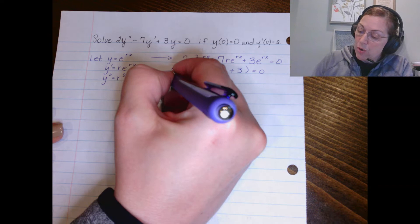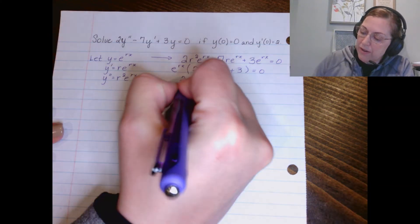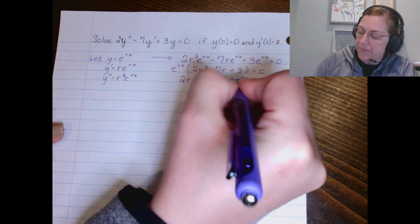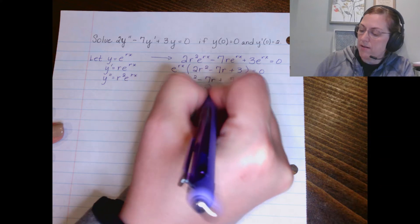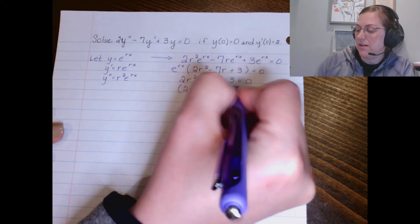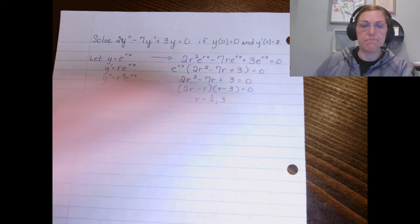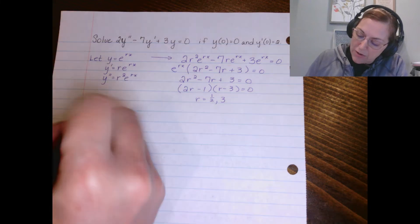And of course we know that e to the rx can't equal zero, so we're going to solve 2r² - 7r + 3, and we can factor that: (2r - 1)(r - 3) = 0. We get that r is 1/2 or r is 3. Let's use that then to write our solution.